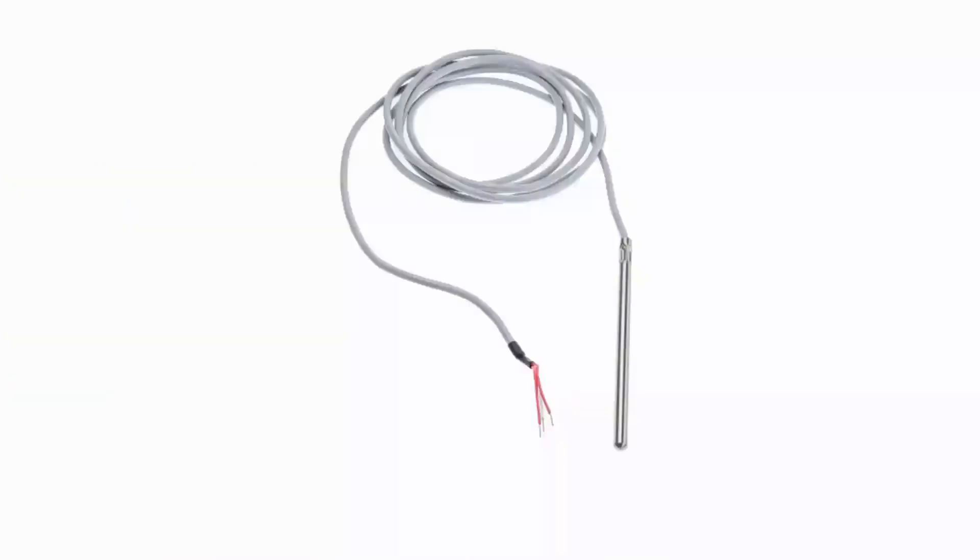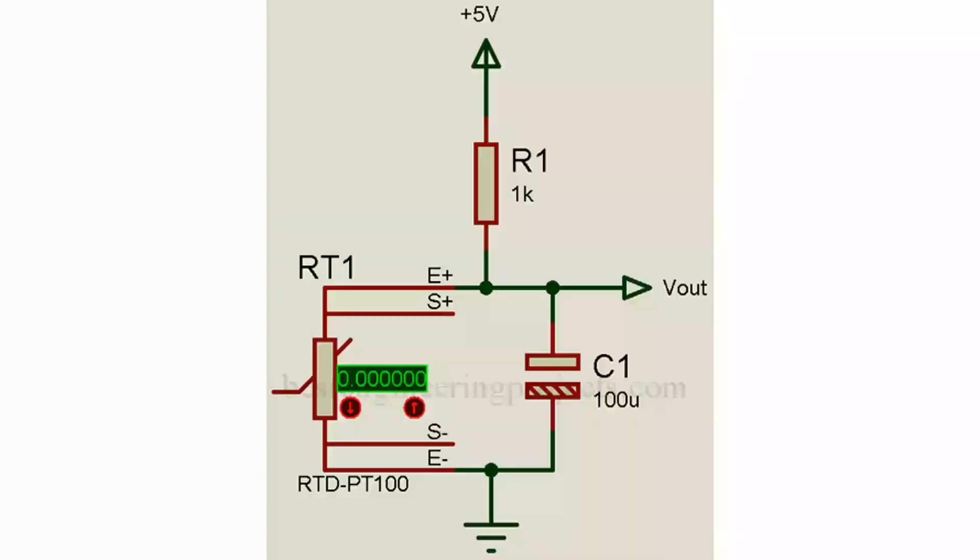Length of RTD sensor and its lead is long and might act as antenna. As a result, it starts to pick up the noise and mixes with temperature voltage. In order to avoid this problem, a capacitor of high value, say 100 microfarad, is connected parallel across RTD sensor. This capacitor acts as low-pass filter and removes almost all noise.